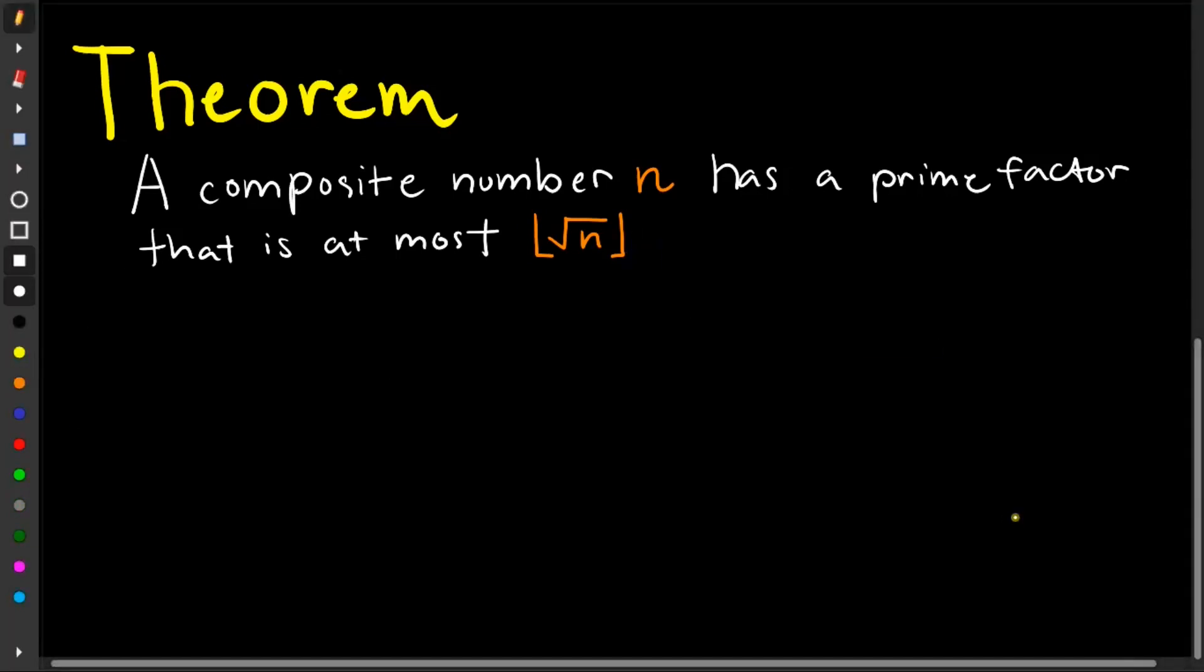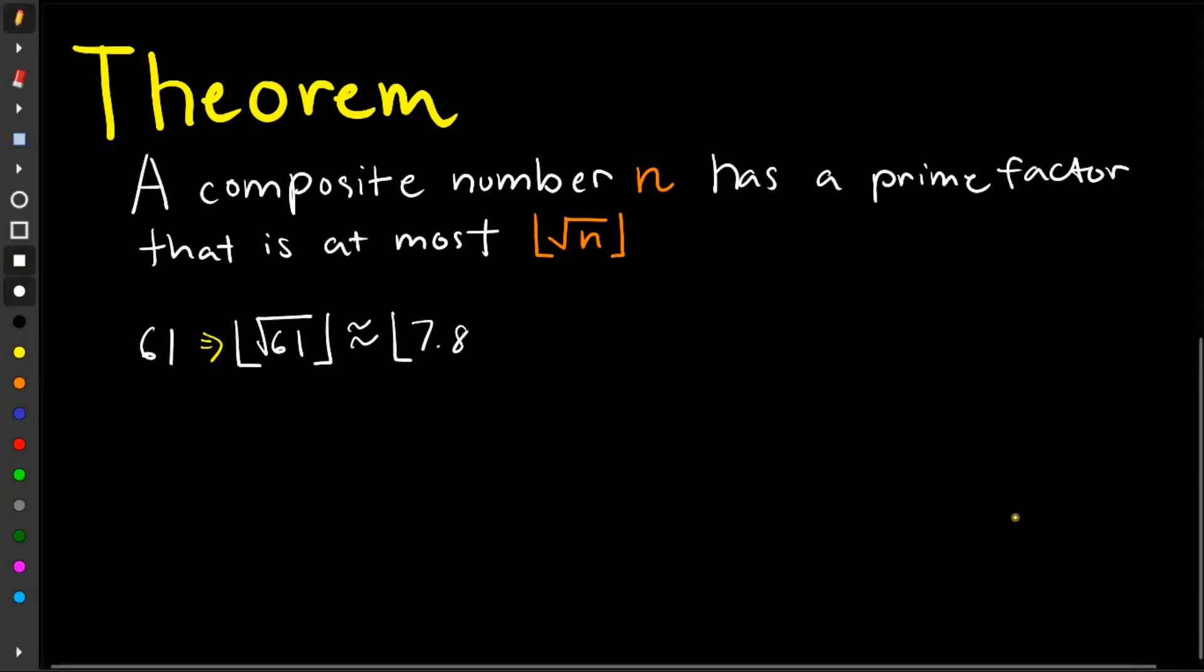Let's try more examples. Now, just a note, feel free to pause the video and try it on your own. So we have 61. Let's check if this number is prime. So we have, applying the theorem again, we have the floor of the square root of 61, is approximately 7.81025. Applying the floor function, this would give us 7.